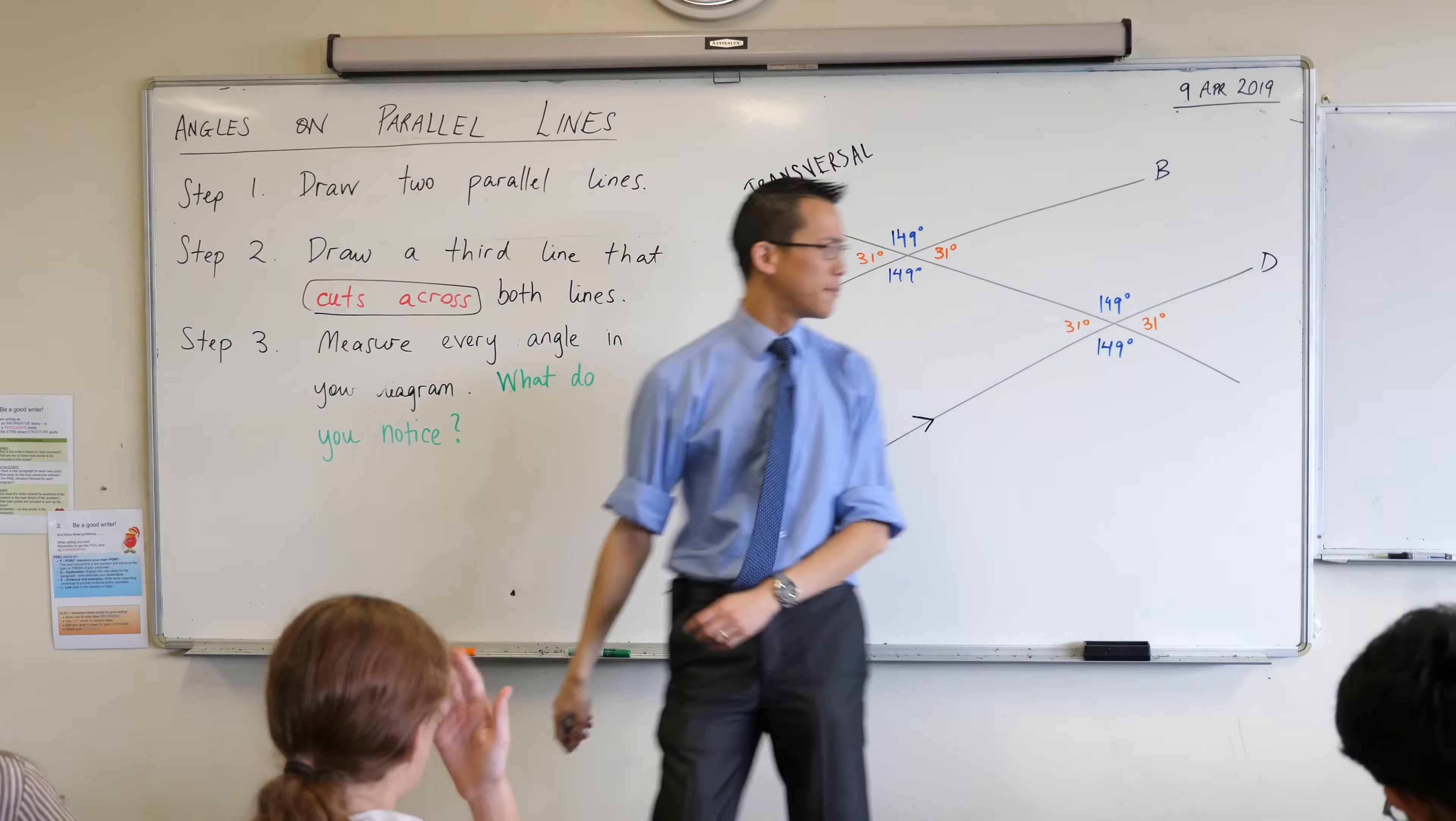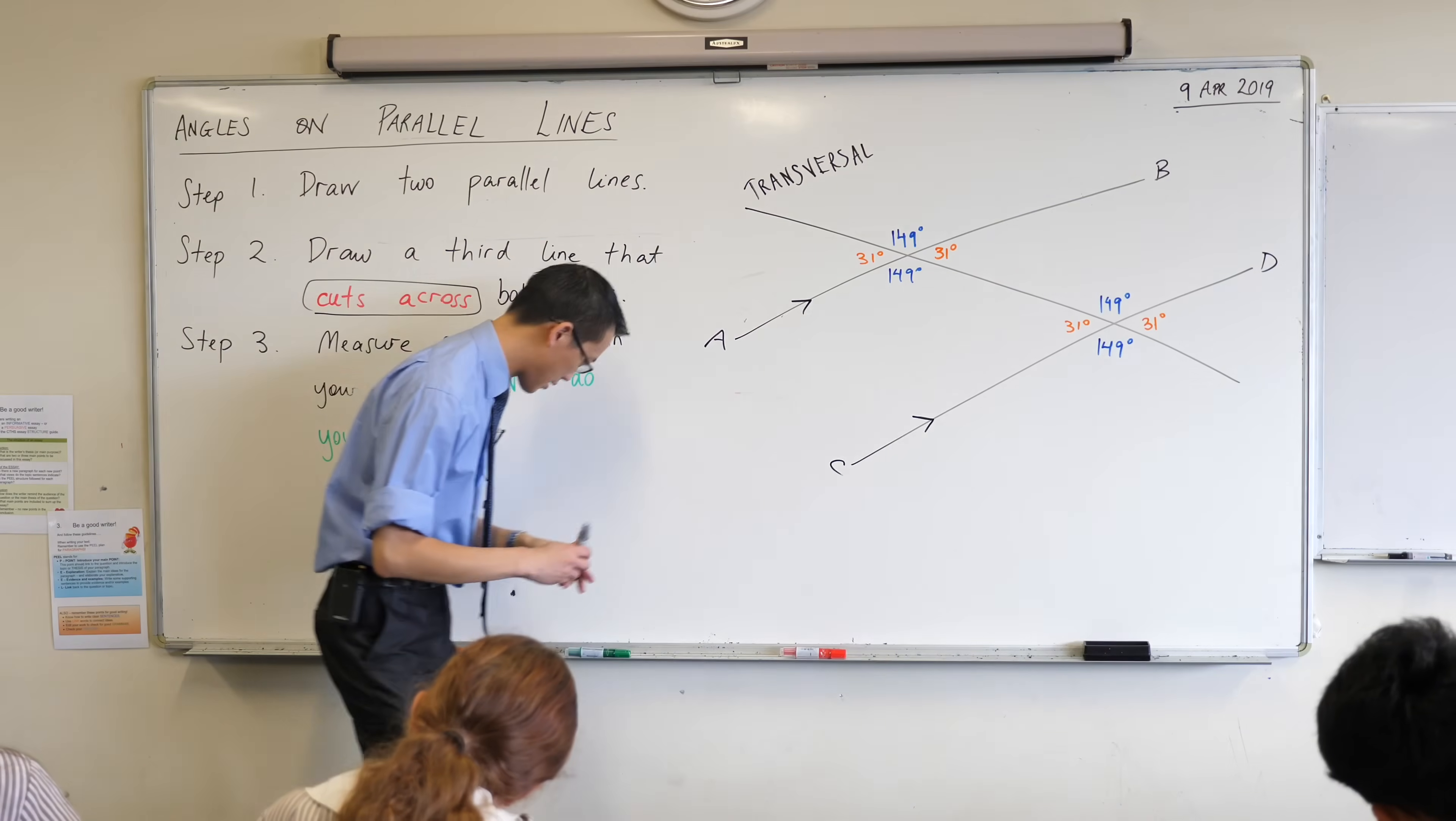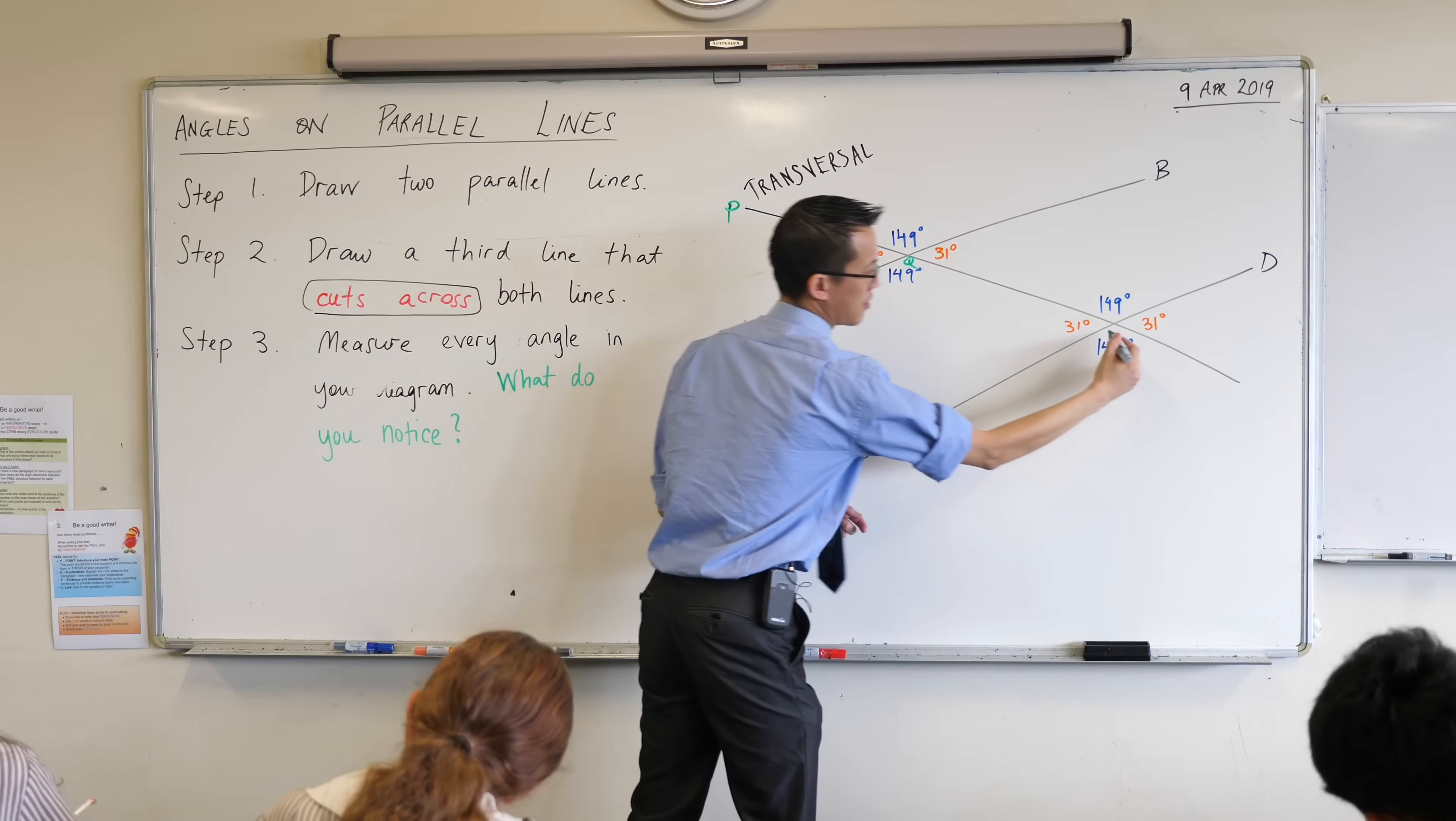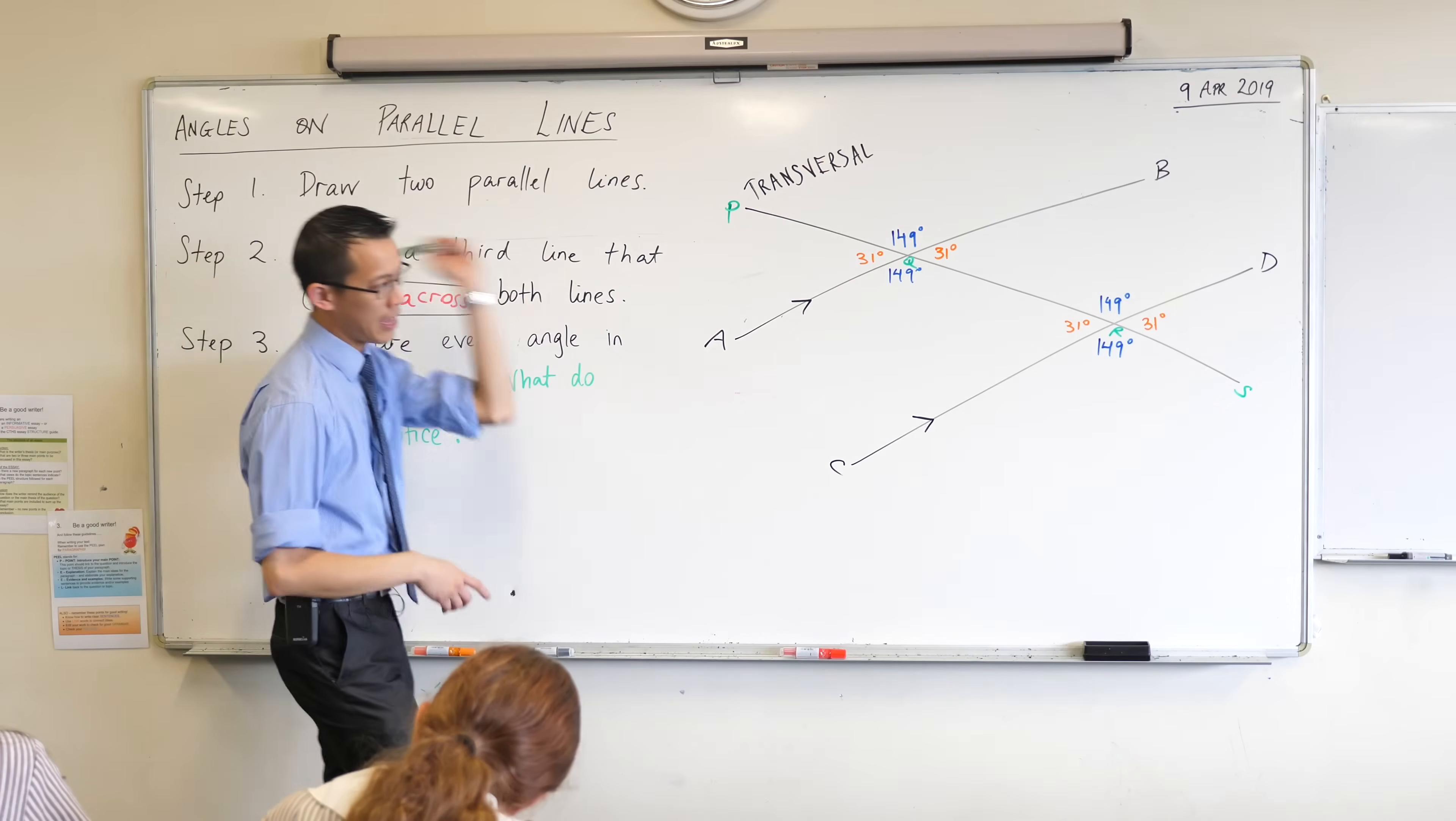This transversal, I'm going to have some different letters going across here and there's one, two, three, four places so I'm gonna call these guys, I need another color here, I'm gonna call this P Q R S. So I've got A B C D that gives me my parallel lines and then this guy cutting across PQRS.